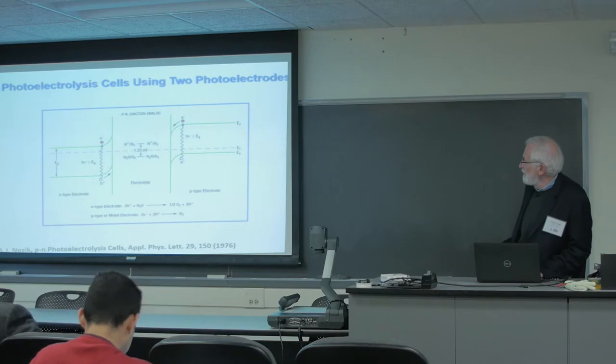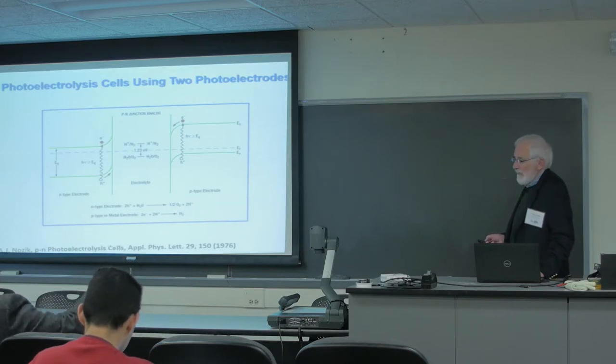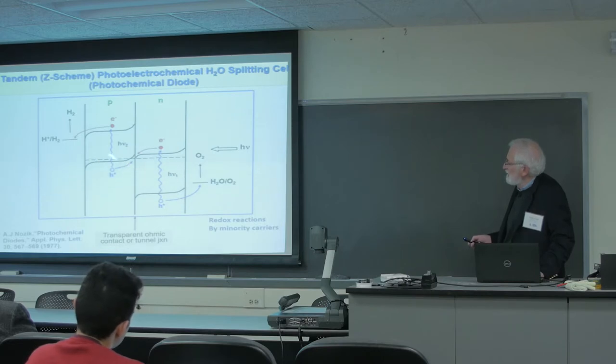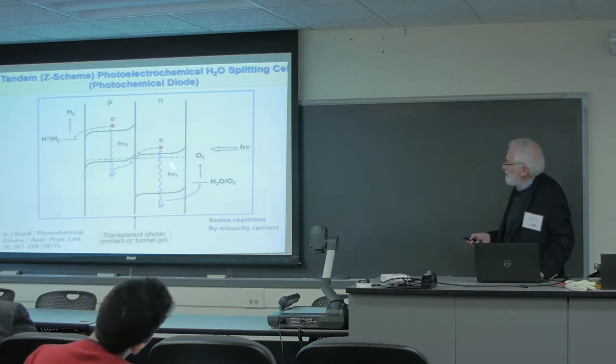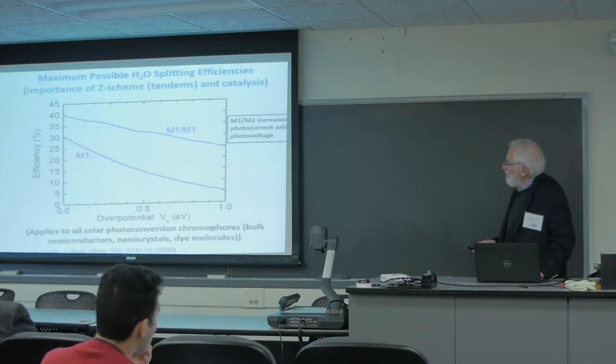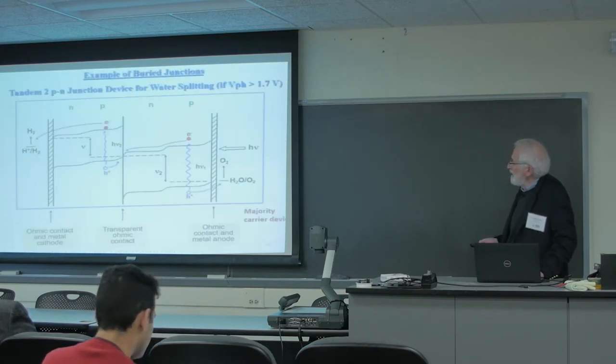Now for solar fuels, you need, just like photosynthesis, you need 2 band gaps of different size. If you can do it with no bias, you can make what we call the photochemical diode, where you have 2 band gaps in series. The light comes in, and you get a boost in voltage, and you can split water.